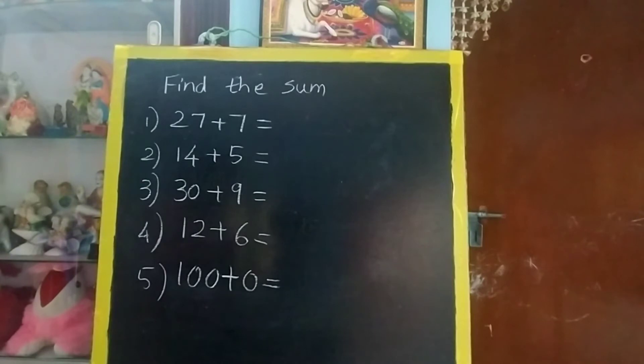Now finding the sum in horizontal way, already you know this. So the first number, but here I have given two digit and three digit numbers. So first number in the mind, 27 in the mind, 7 in the finger.